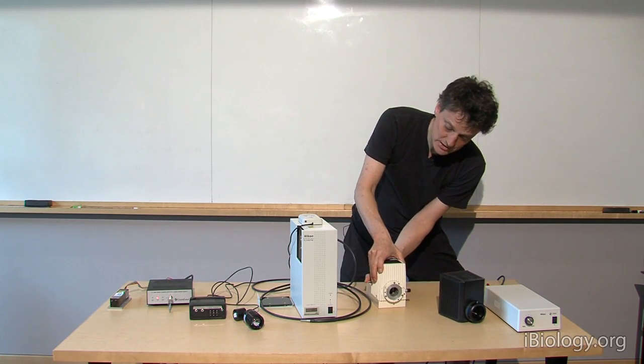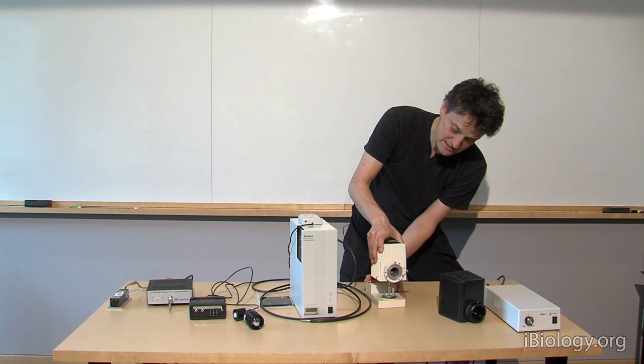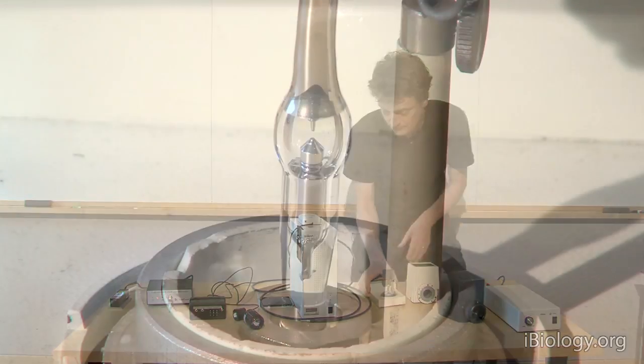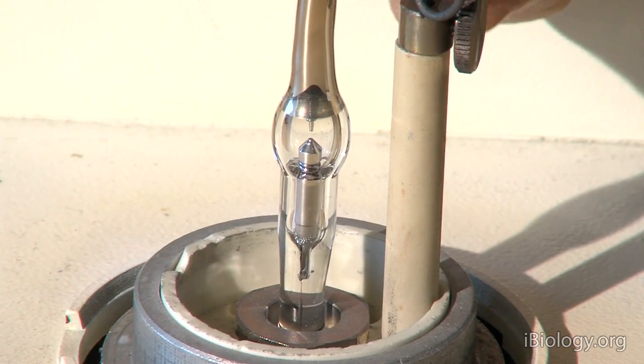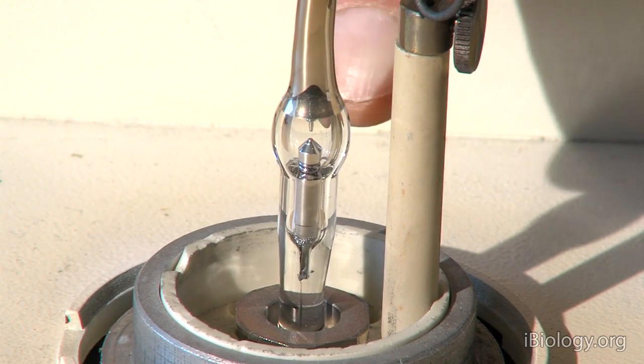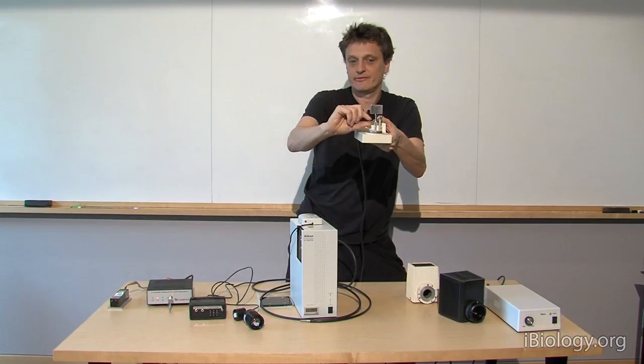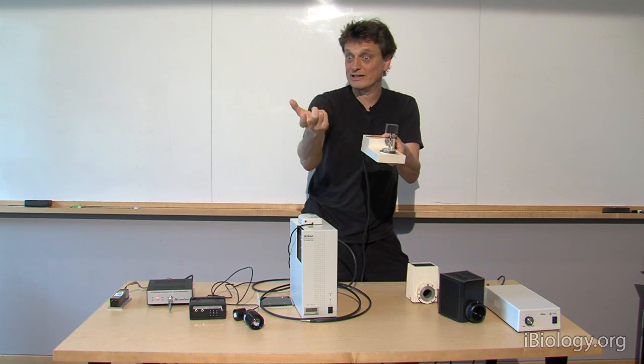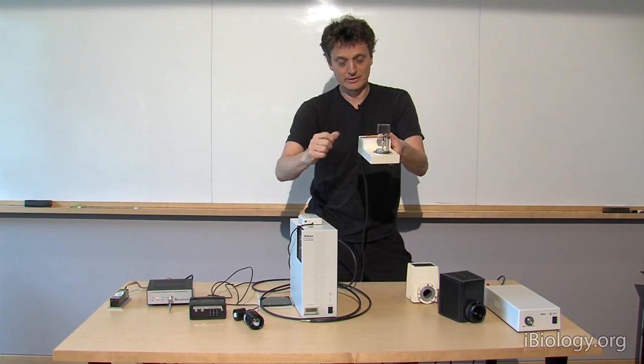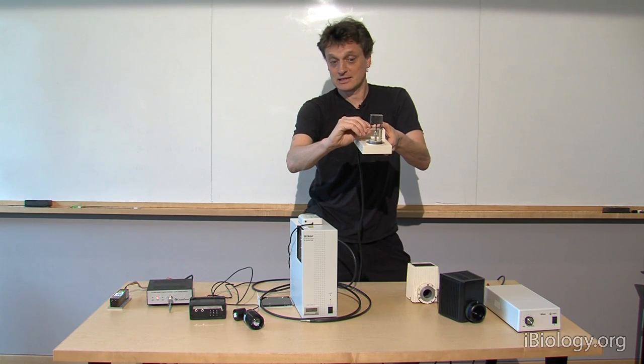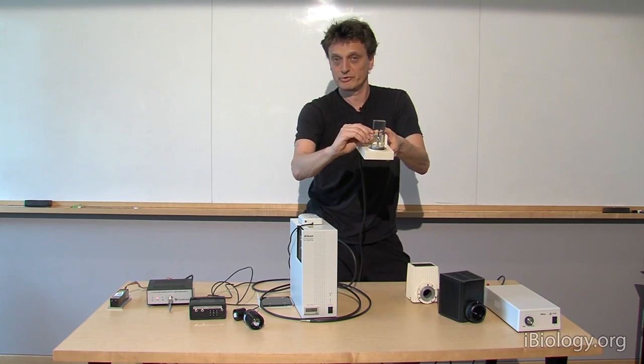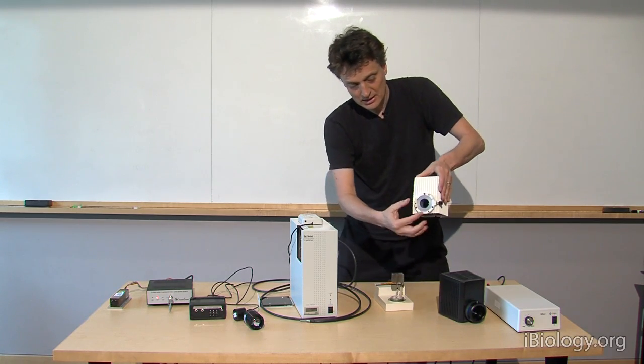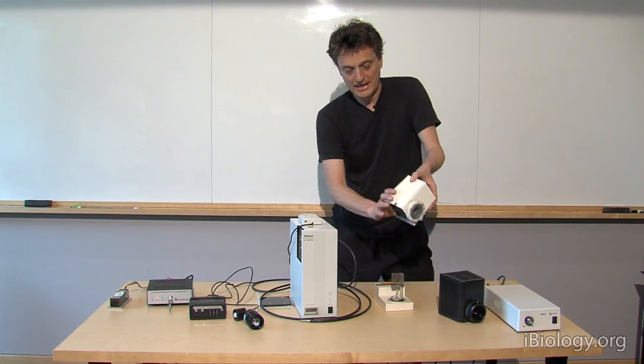A light source that has been used for many years in fluorescence microscopy is this mercury arc lamp. This is the bulb and in this bulb there is an anode and a cathode and a very high voltage is being put over this such that it forms an arc, just the same thing like when you are welding. This arc is super bright. That arc is then projected so the light goes in every direction through a condenser lens and reaches our microscope.